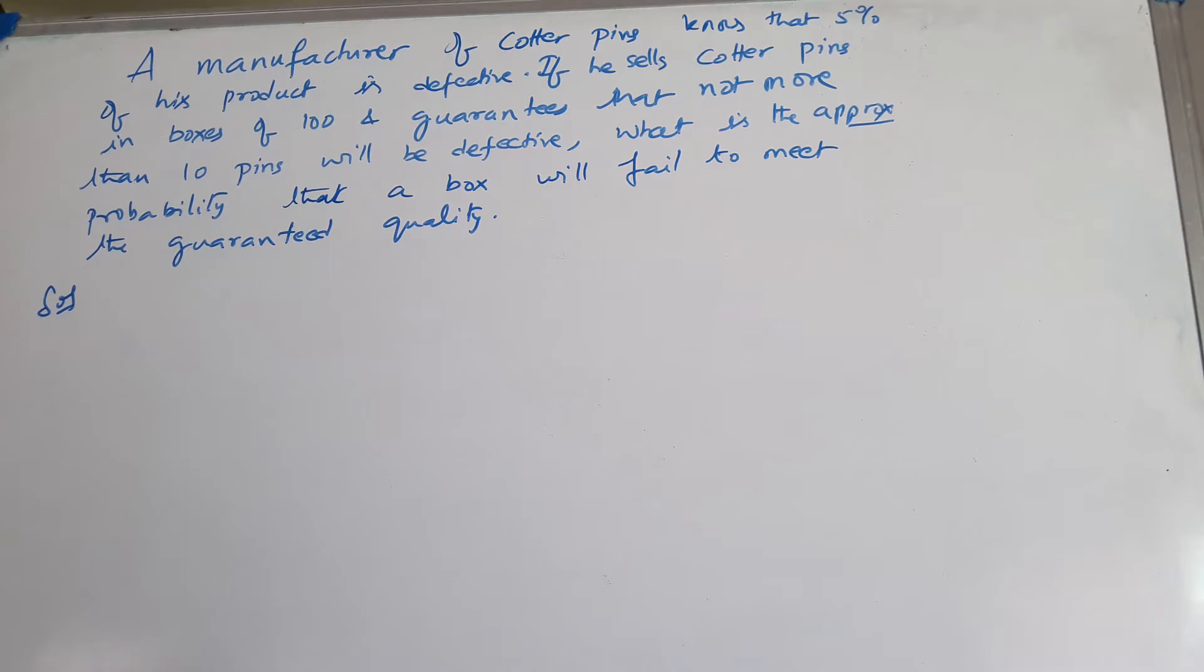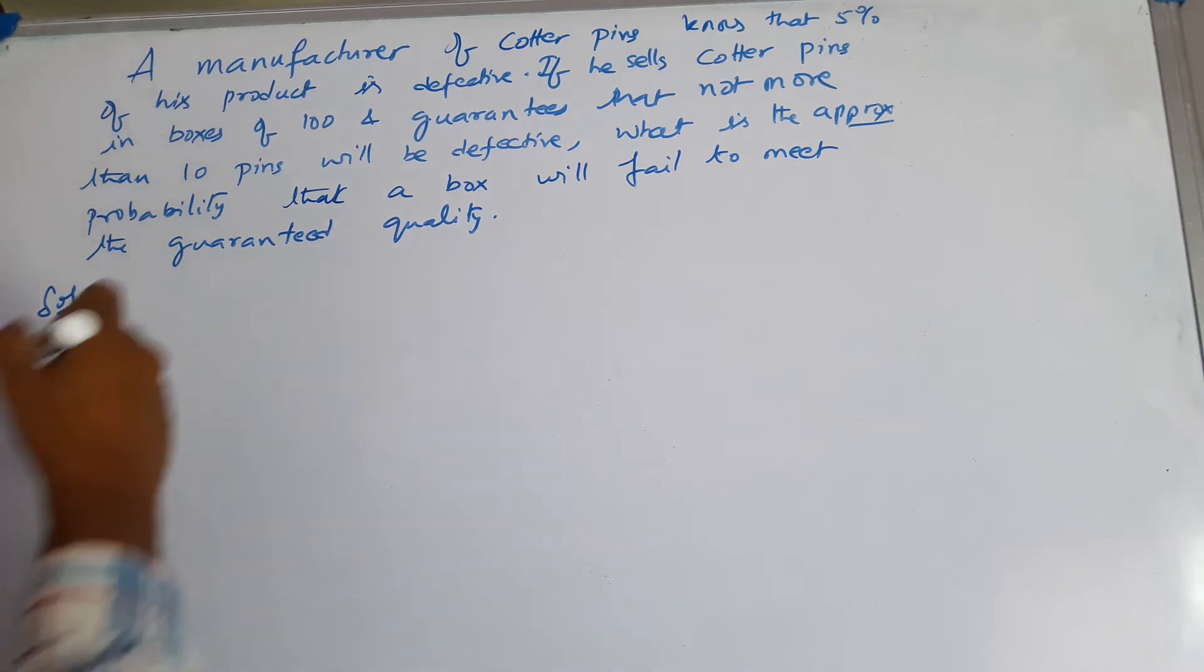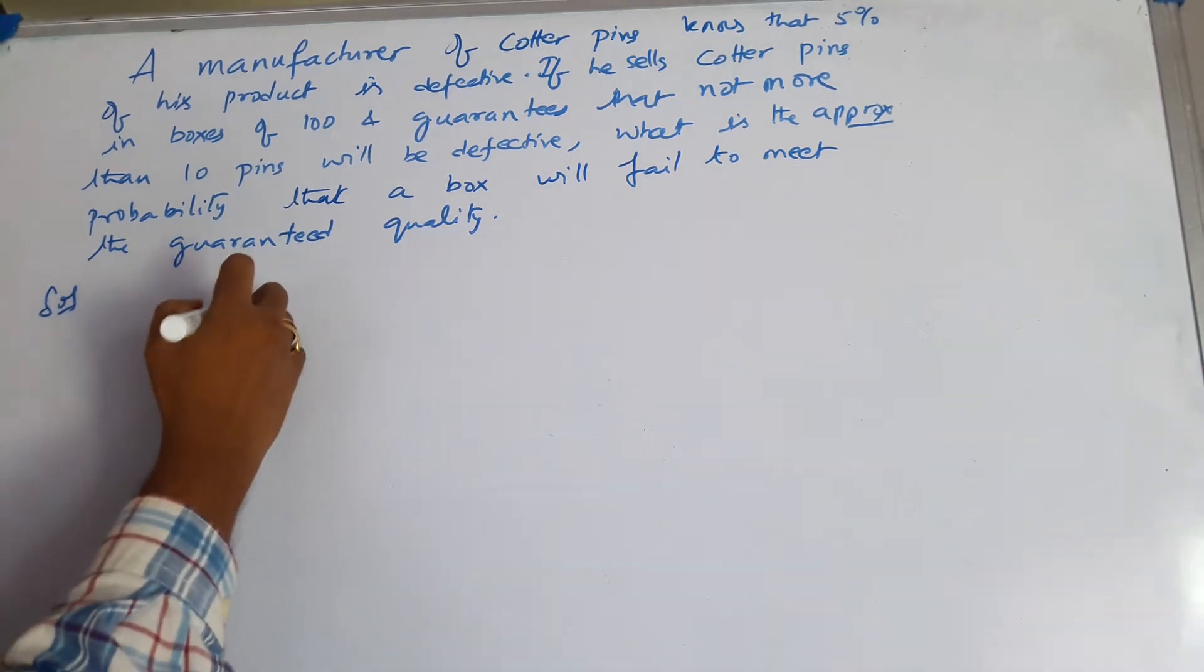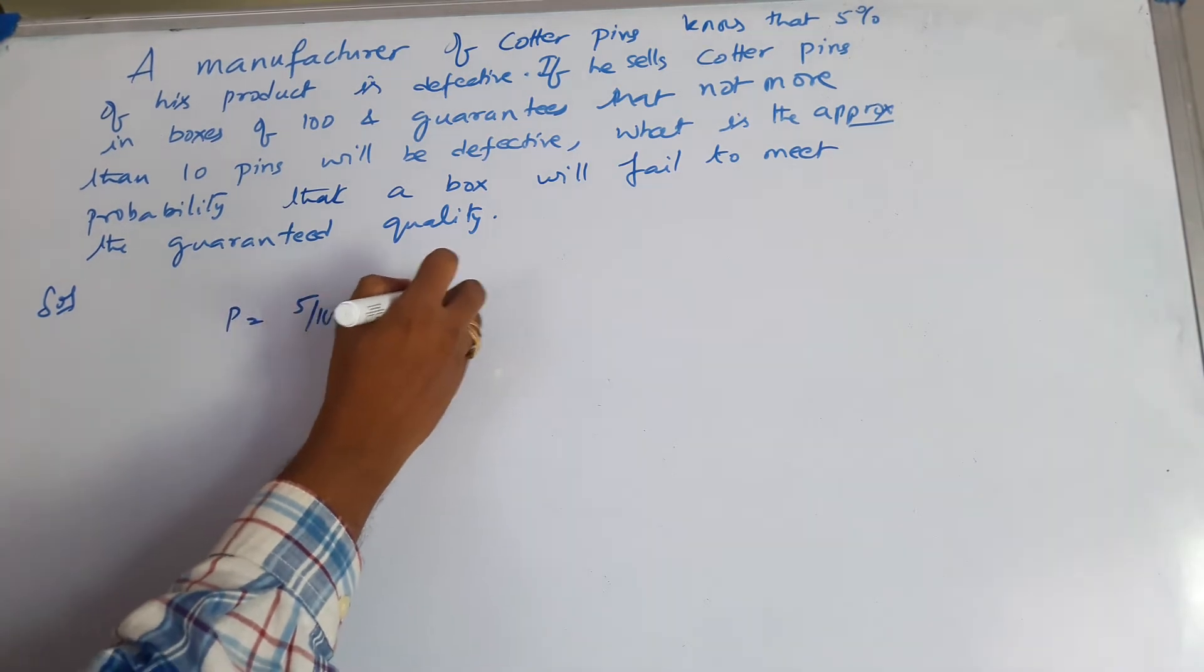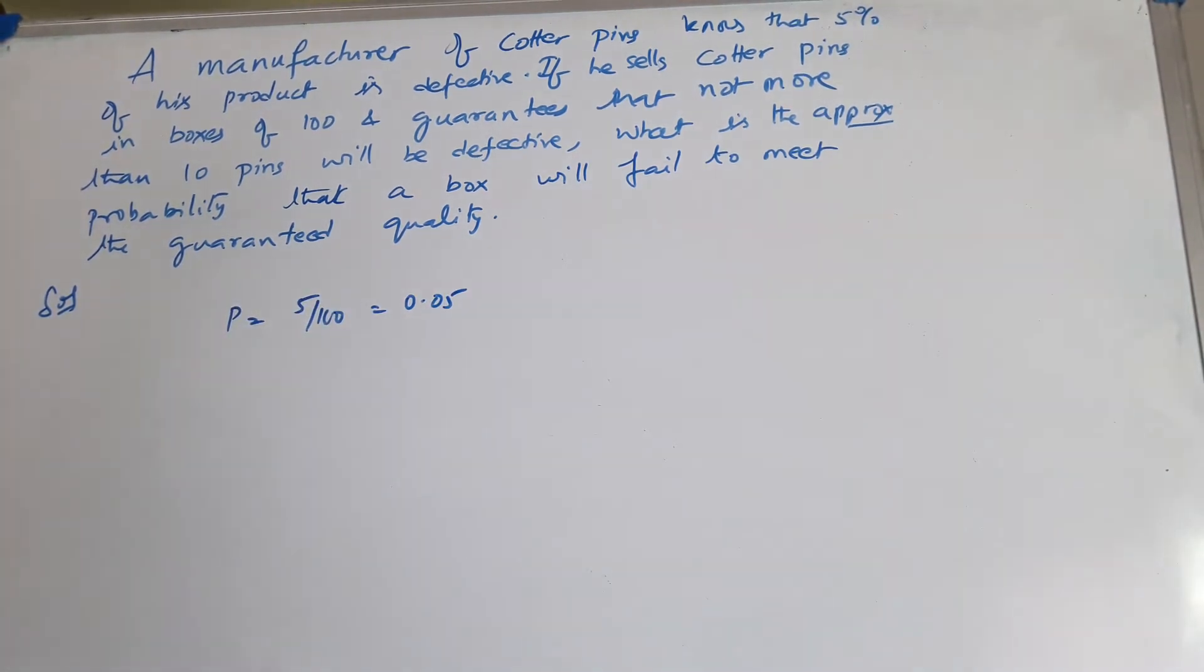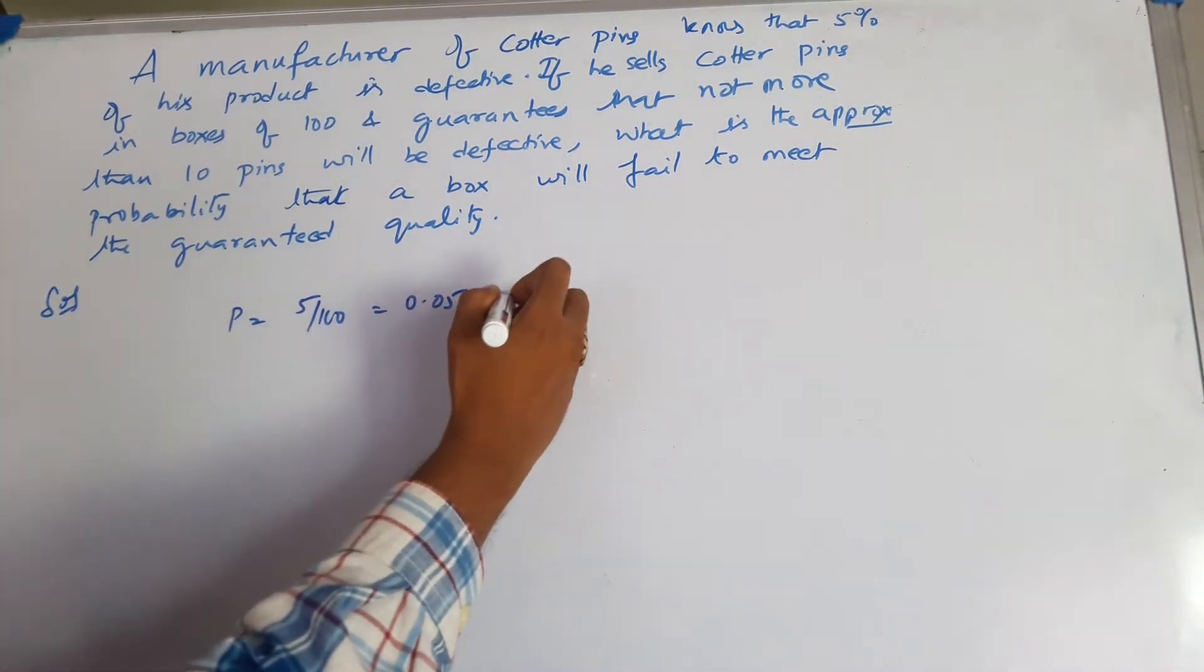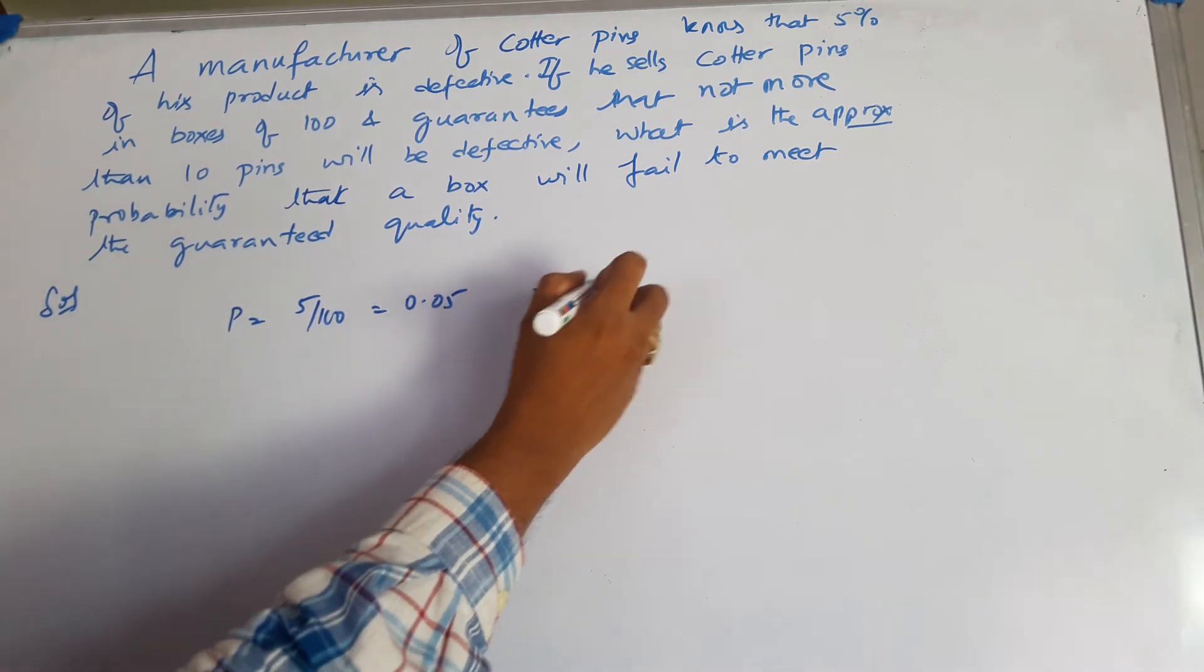What will be the approximate probability that a box will fail to meet the guaranteed quality? Now, 5% gives us P equals 5 by 100, that is 0.05, and N equals 100.